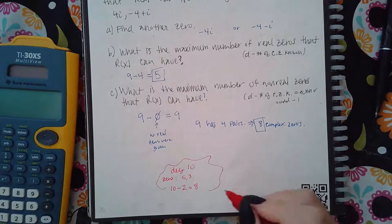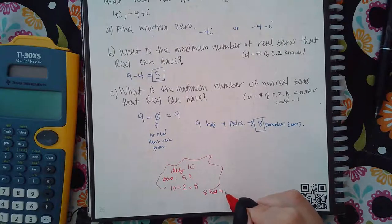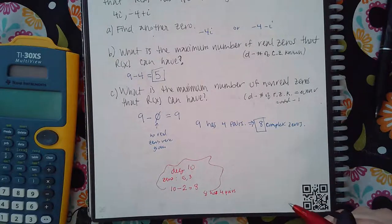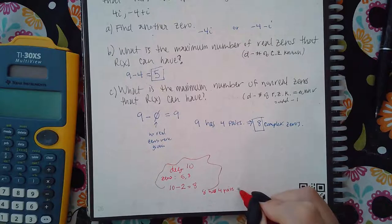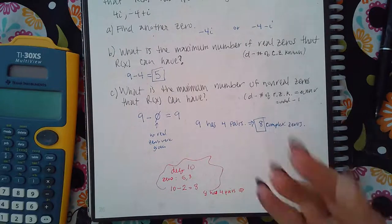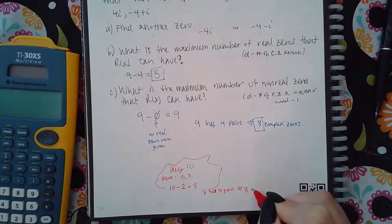In this case, 8 has 4 pairs. It doesn't have any extra. Since it's pairs—a pair here and a pair there and a pair there and a pair there—that's a total of 8 complex zeros.